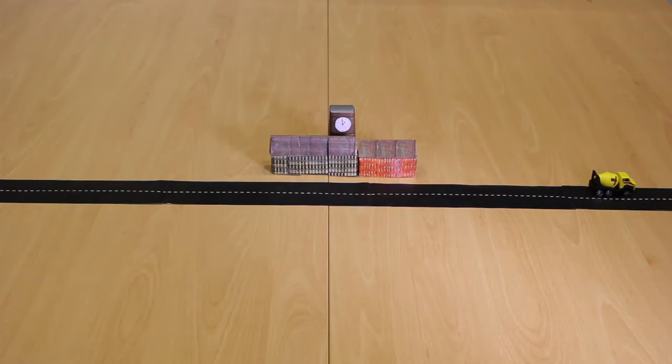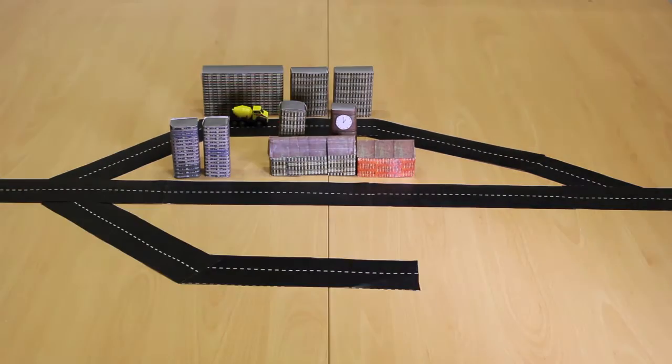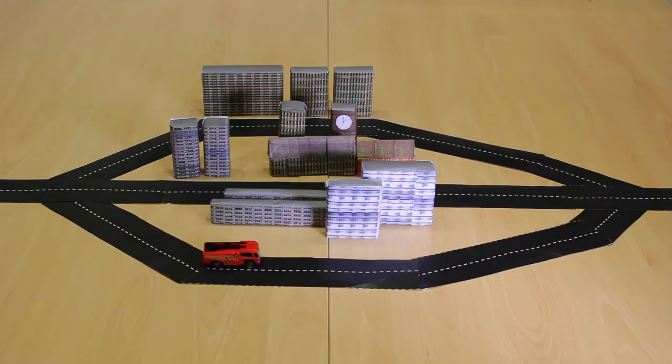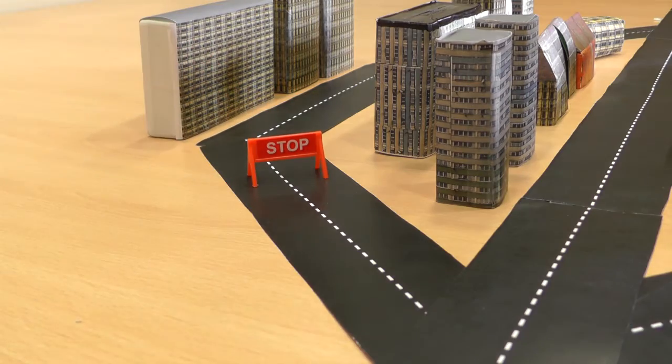Tumours can even trigger new blood vessels to grow to help bring in supplies, allowing them to expand just like a city when transport links are improved. In a type of liver cancer called hepatocellular carcinoma,